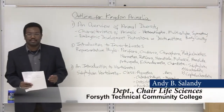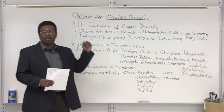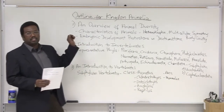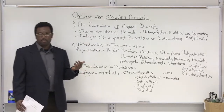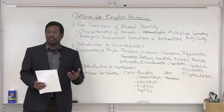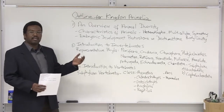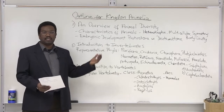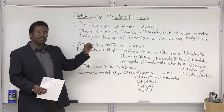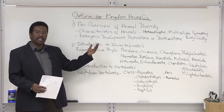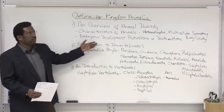Good morning class. Today we're going to be talking about animal diversity. From the outline, my goal is to speak to animal diversity first in terms of the characteristics that put every organism into the animal kingdom, then we're going to look at the distribution in terms of how it's organized into invertebrates and vertebrates — these are formal phylum names but just for classification in terms of grouping.